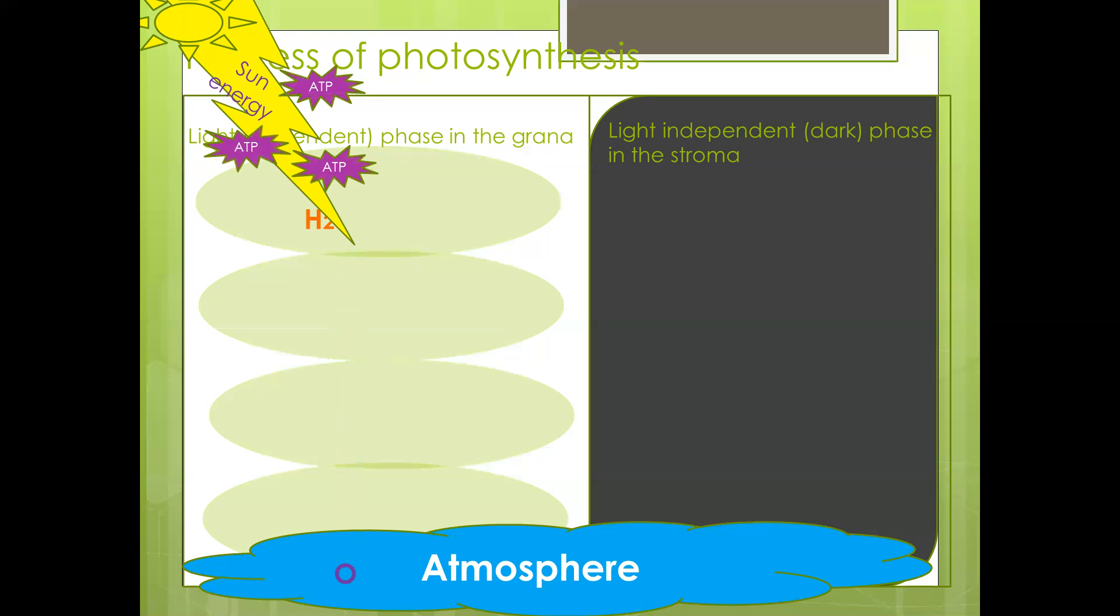So from the light phase, the hydrogen is required in the dark phase. The dark phase occurs within the stroma, the background of the chloroplast. We have molecules known as coenzymes that will carry this hydrogen from the light phase to the dark phase. Then the carbon dioxide from the atmosphere also will enter into the stroma of the chloroplast.